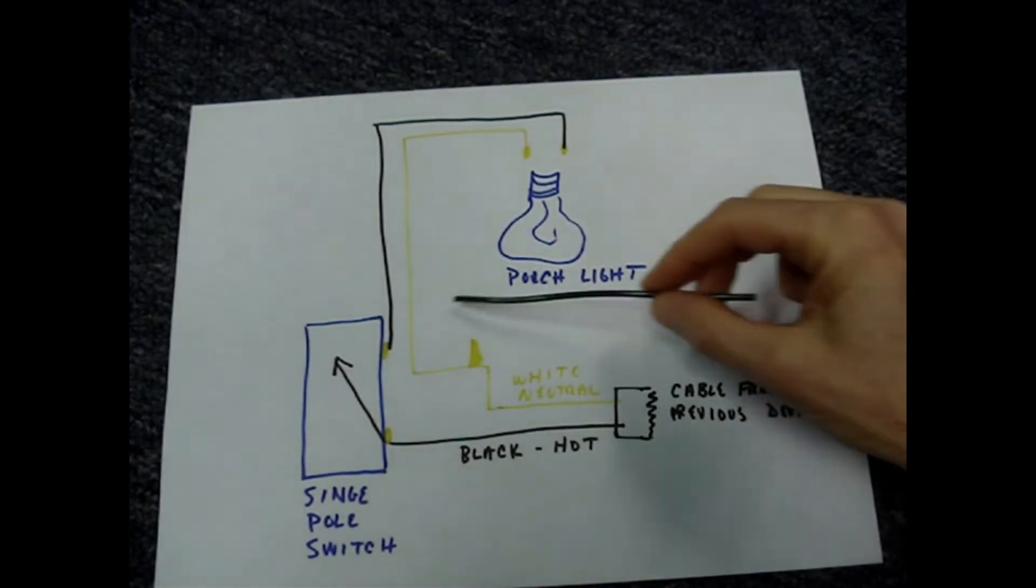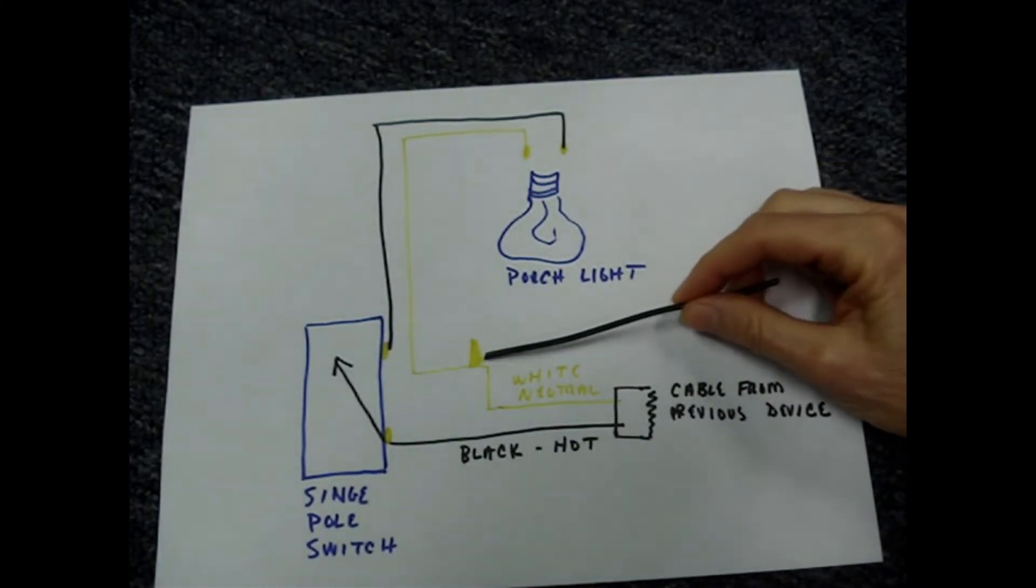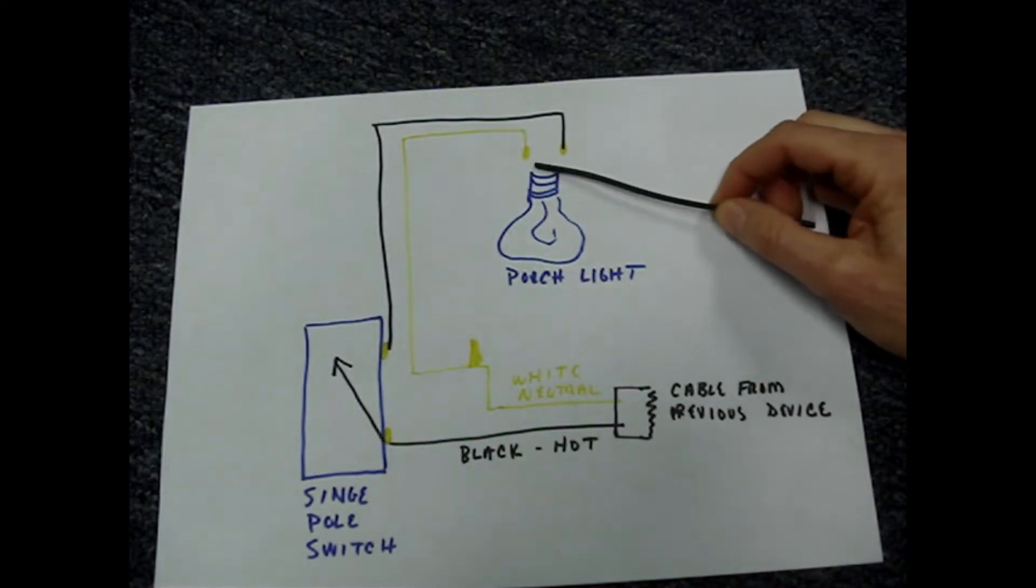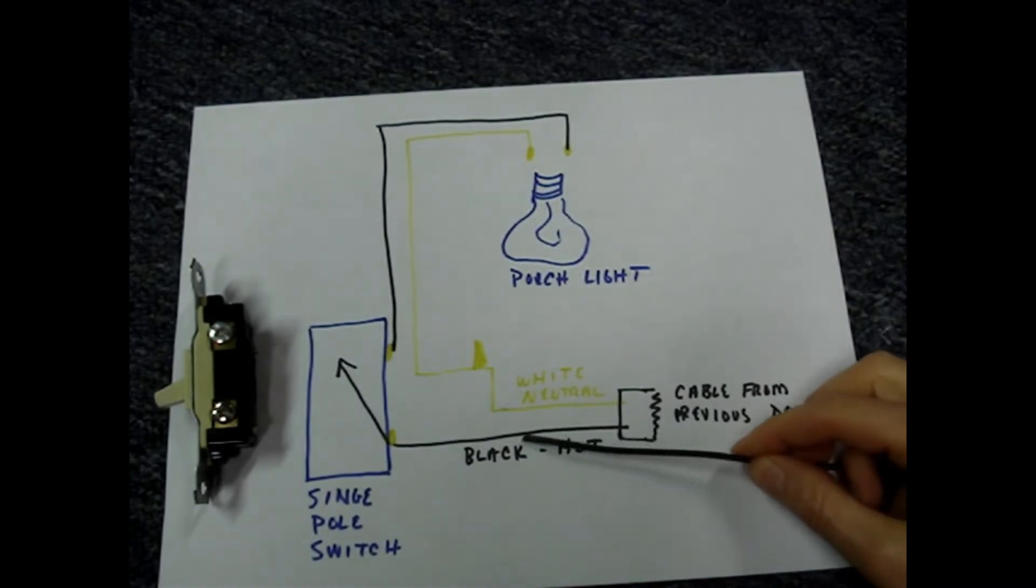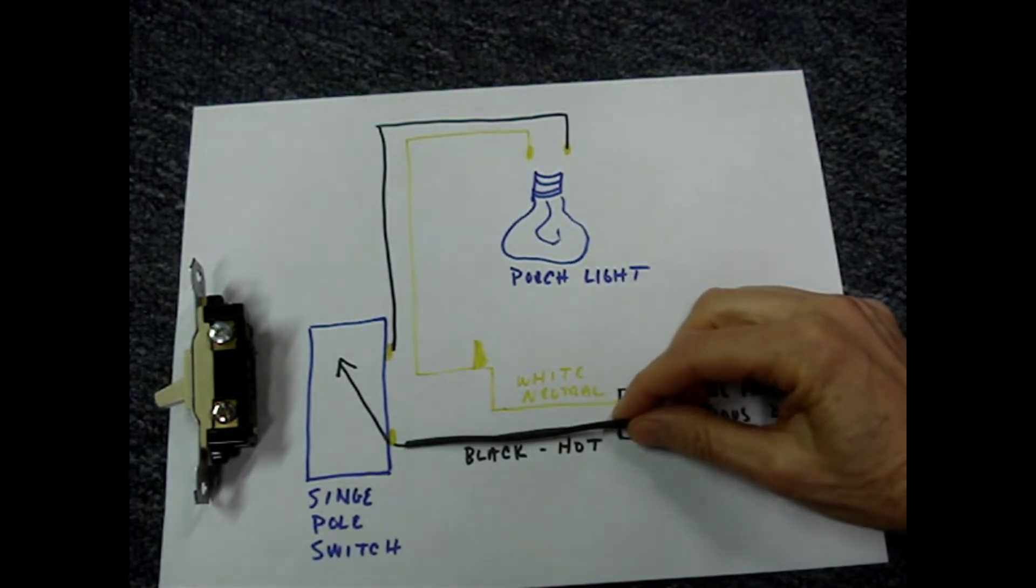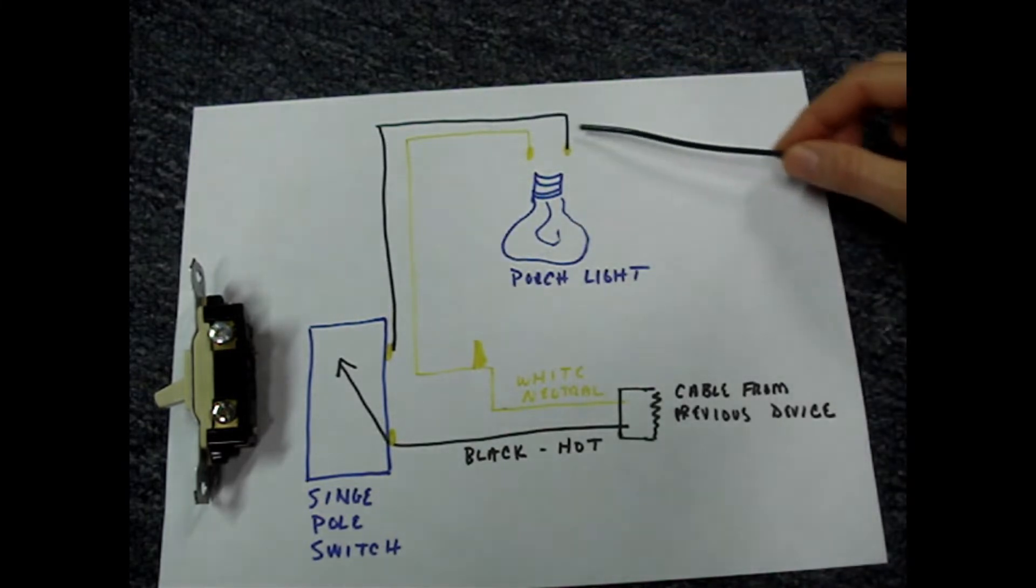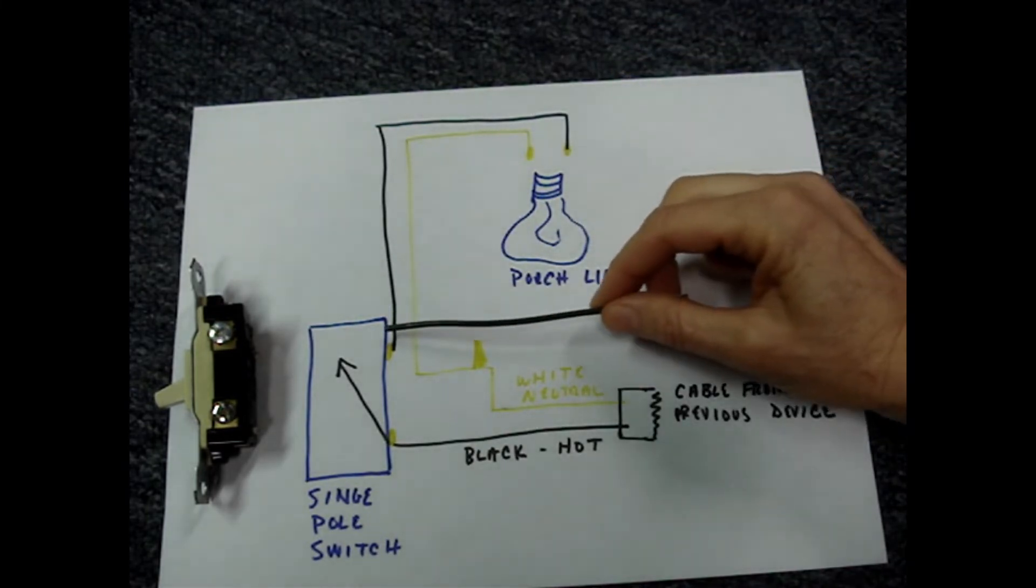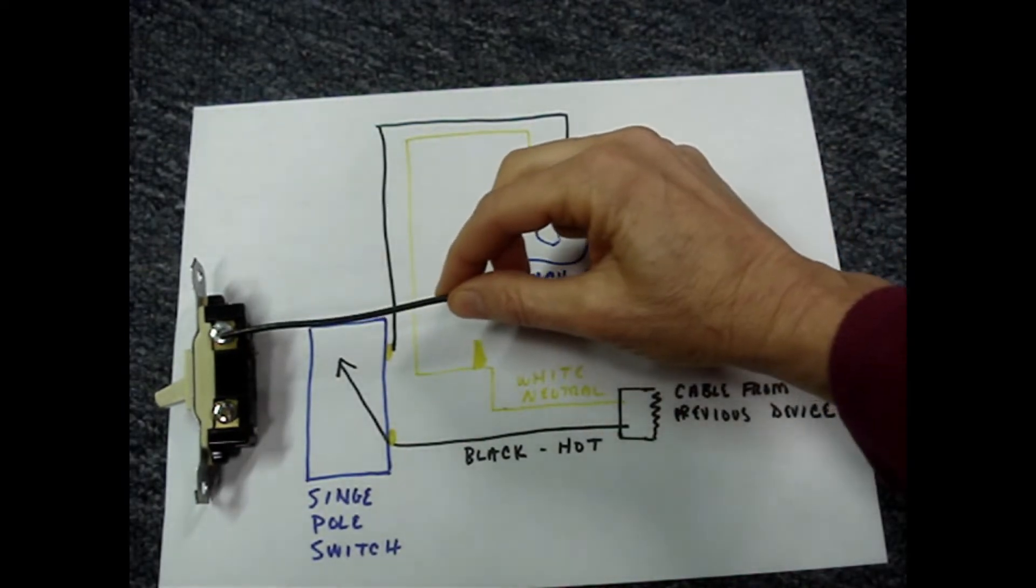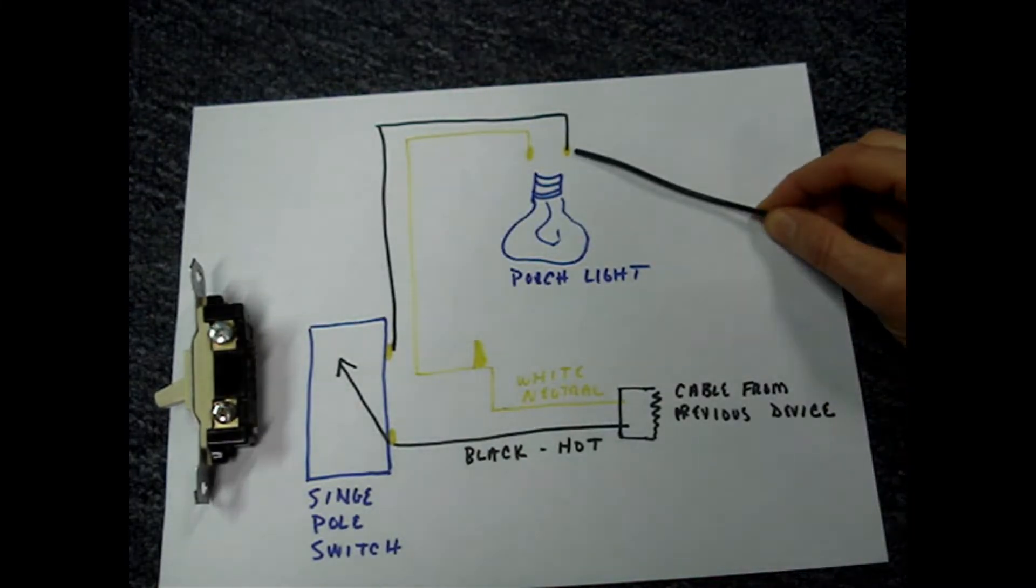A cable feeds into the switch box. The white wire is spliced and it leaves the box on another cable and is connected to one of the terminals on the porch light. The incoming cable's black wire is connected to one of the terminals on the single pole switch and the cable that leaves the box and goes to the porch light has its black wire connected to this connection and also to the light.